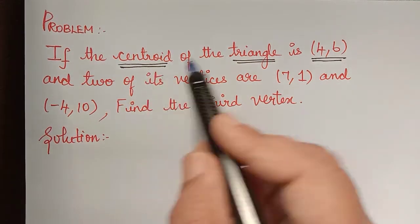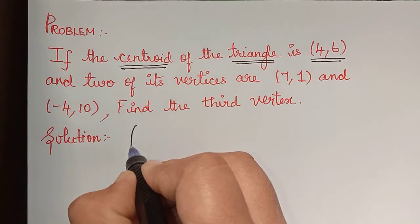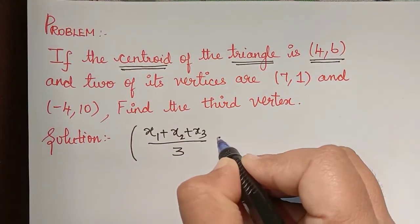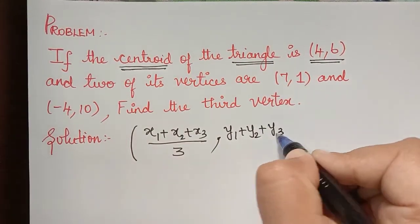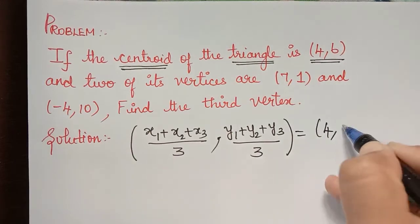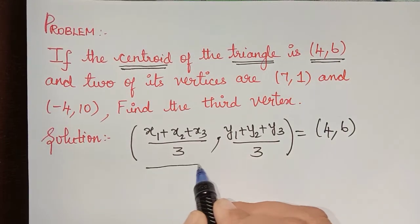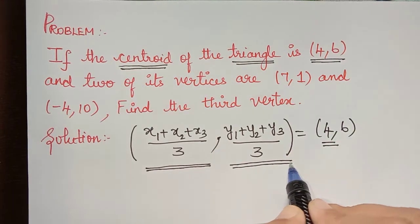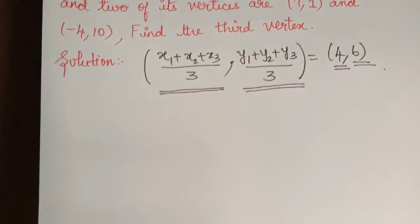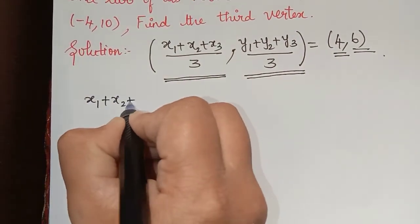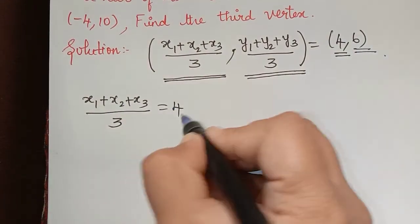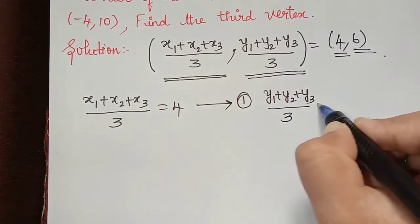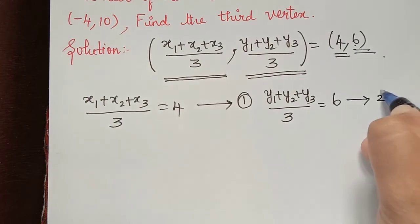Now here they have given the centroid to us, that is (4, 6). So the centroid equals (4, 6), which means x1 plus x2 plus x3 divided by 3, y1 plus y2 plus y3 divided by 3 is equal to (4, 6). From this we get: x1 plus x2 plus x3 divided by 3 equals 4 — equation 1 — and y1 plus y2 plus y3 divided by 3 equals 6 — equation 2.